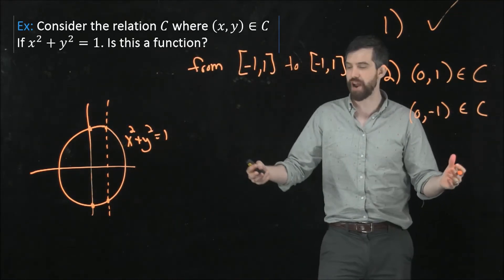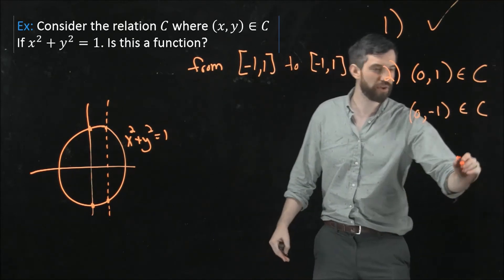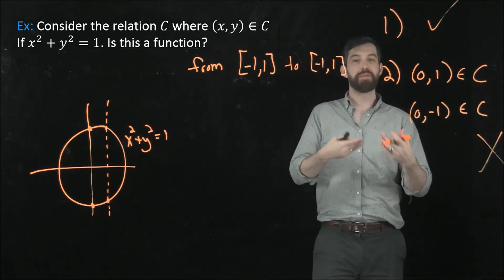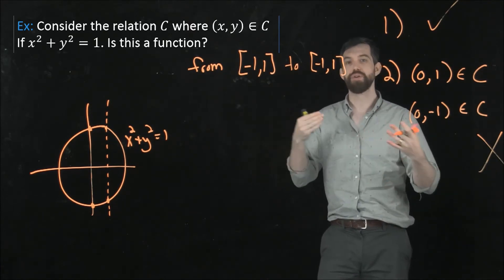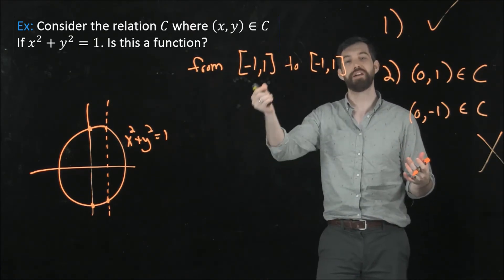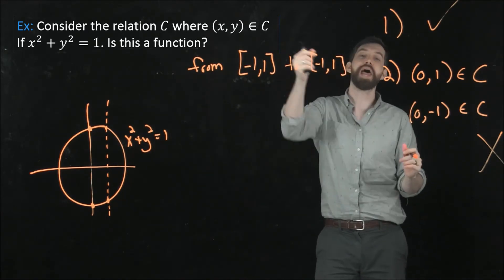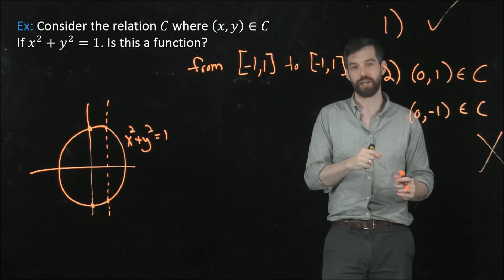So both of these points are there. It fails the vertical line test, and so it is not a function. So this is an example of something that is a relation, but not a function, because of its failing of that second property, that there is more than one output associated to this single input.